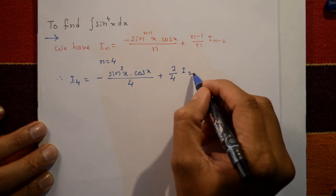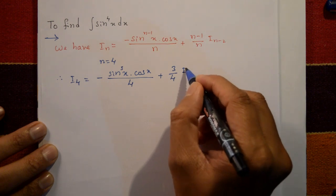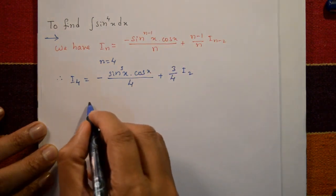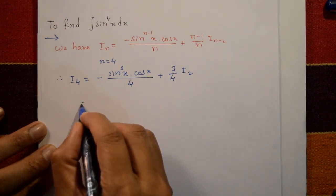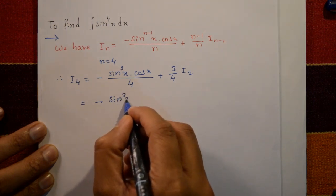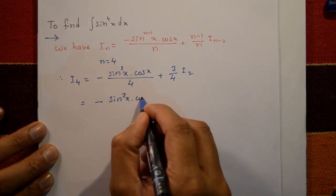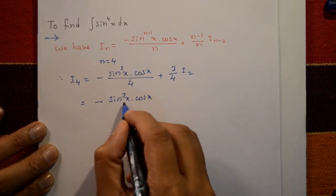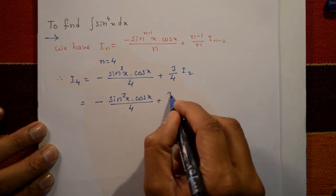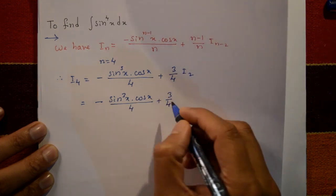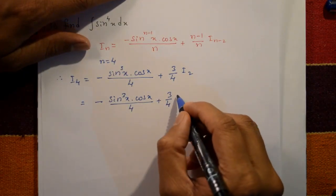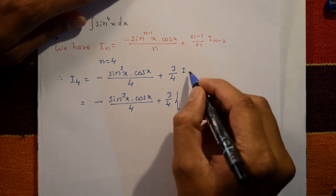Now find I₂ by substituting n = 2. So I₄ = minus sin³x · cos x divided by 4, plus (3/4) · I₂.